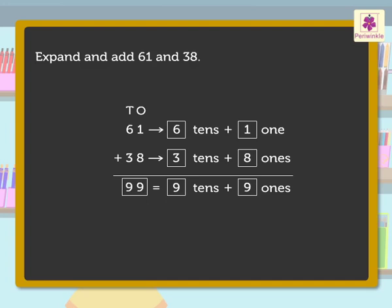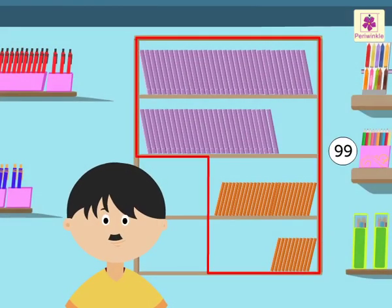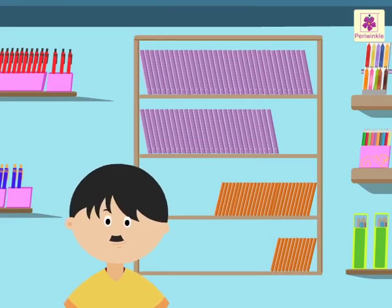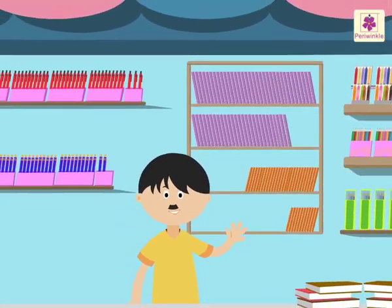So 61 plus 38 is equal to 99. Look, we found the answer! There are 99 notebooks on the rack in all. Wasn't it fun learning to expand and add numbers?